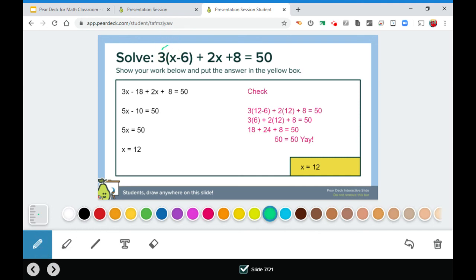You could have showed distributive property here and we could have wrote it out right on the screen - 3x minus 18 plus 2x plus 8 equals 50. Might be sloppier, but you can do it and show all your work and process there.